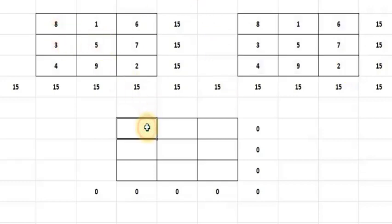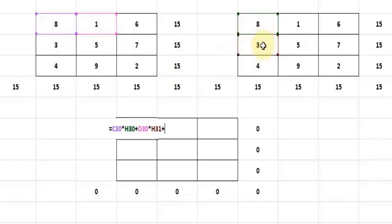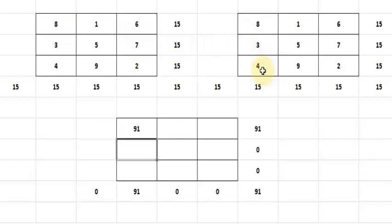We are applying the matrix multiplication formula here. You put an equals sign and multiply this element with the corresponding element and add — so this into this, plus this into this, plus this into this — and that gives you this value.